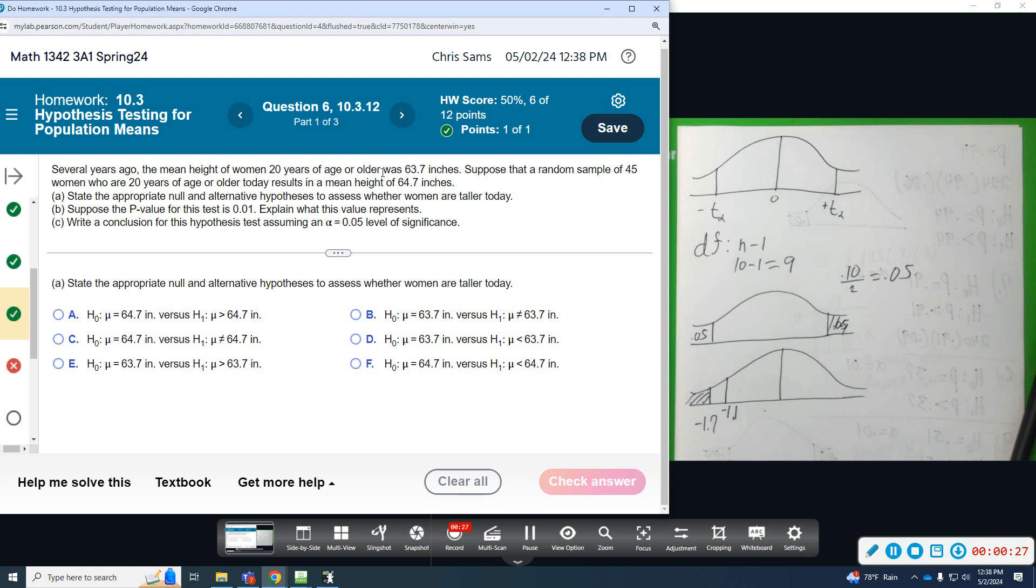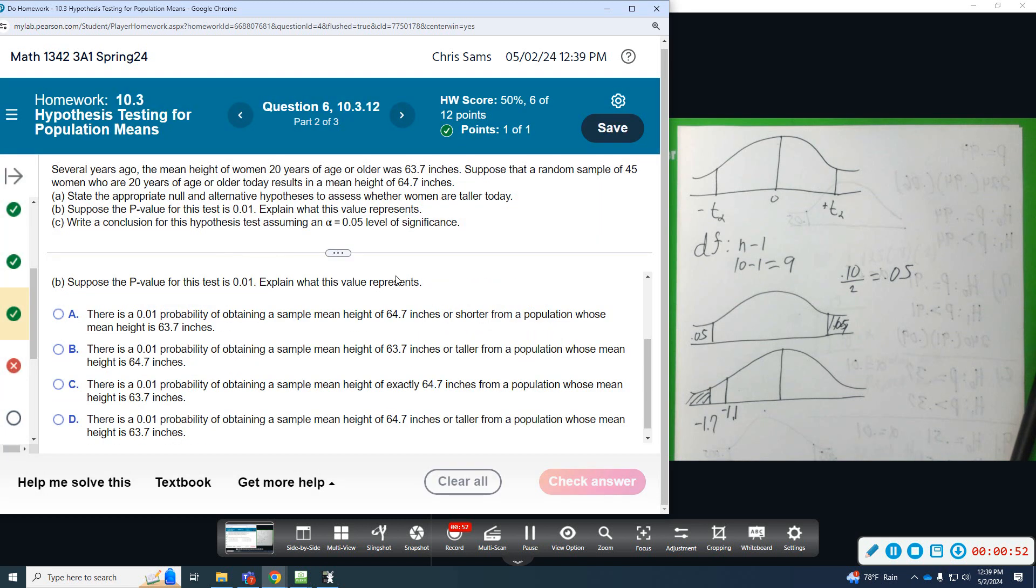We are given that the mean is 63.7, so that's going to be our null hypothesis: mean equals 63.7. We are testing whether they are taller, so greater than is going to be our alternative hypothesis. 64 not 63, and this is greater than, so option E looks good.